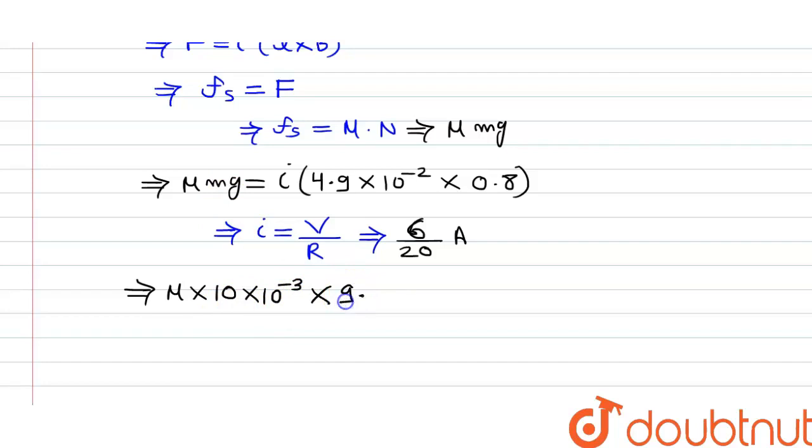So we get 10 gram multiplied by what is the value of g? It is 9.8 meter per second square equals to what is the current value? It is 6 divided by 20 multiplied by 4.9 into 10 raised to minus 2 multiplied by 0.8.